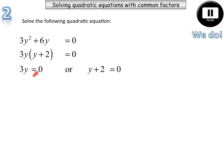OK, the first part is equal to 0 or the second part is equal to 0. Divide both sides by 3, we end up getting y is equal to 0. Subtracting 2 from both sides, we get y is equal to negative 2. Just writing them in ascending order, we have y is equal to negative 2 or 0.